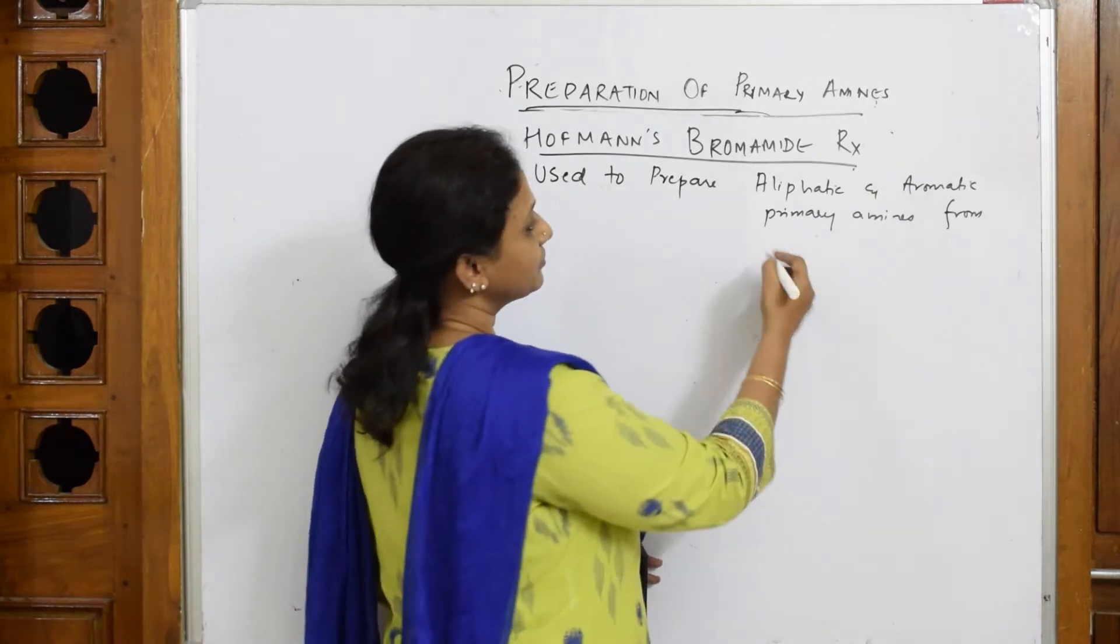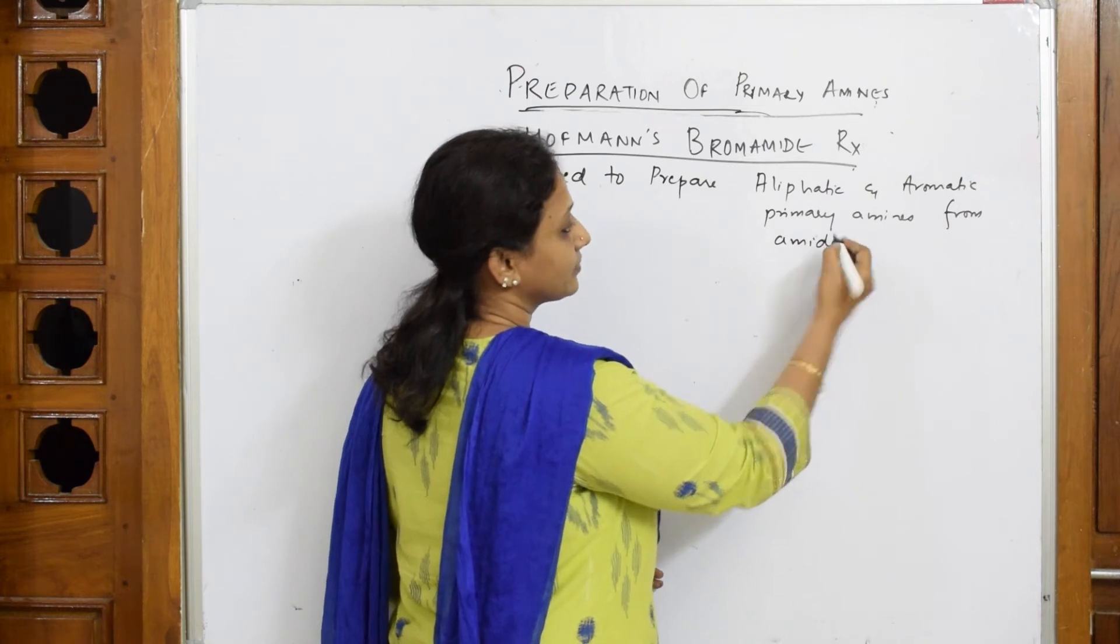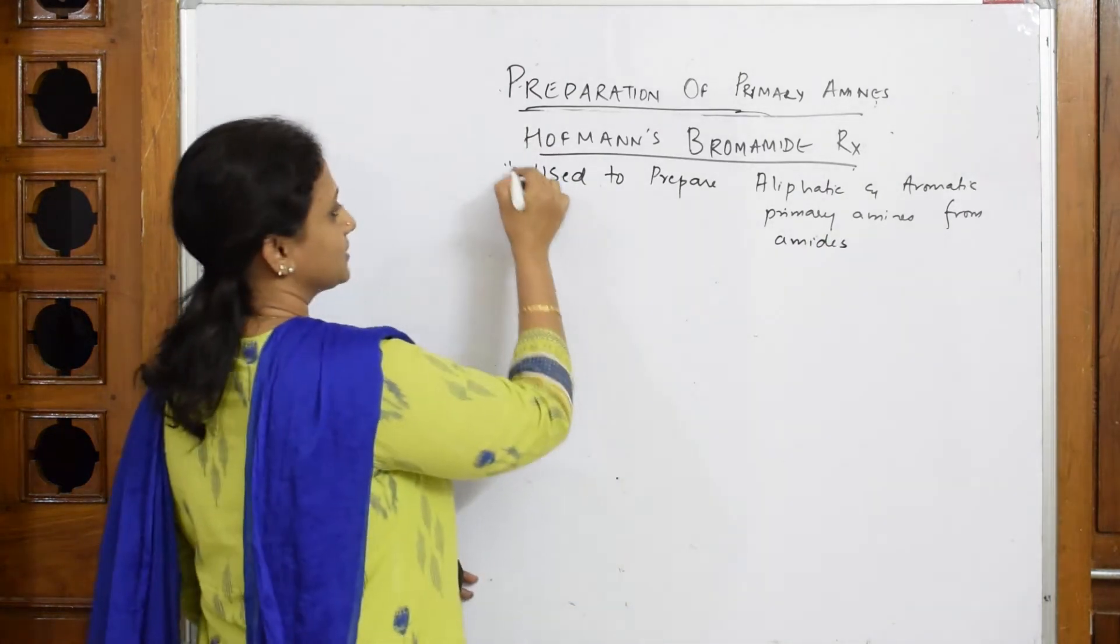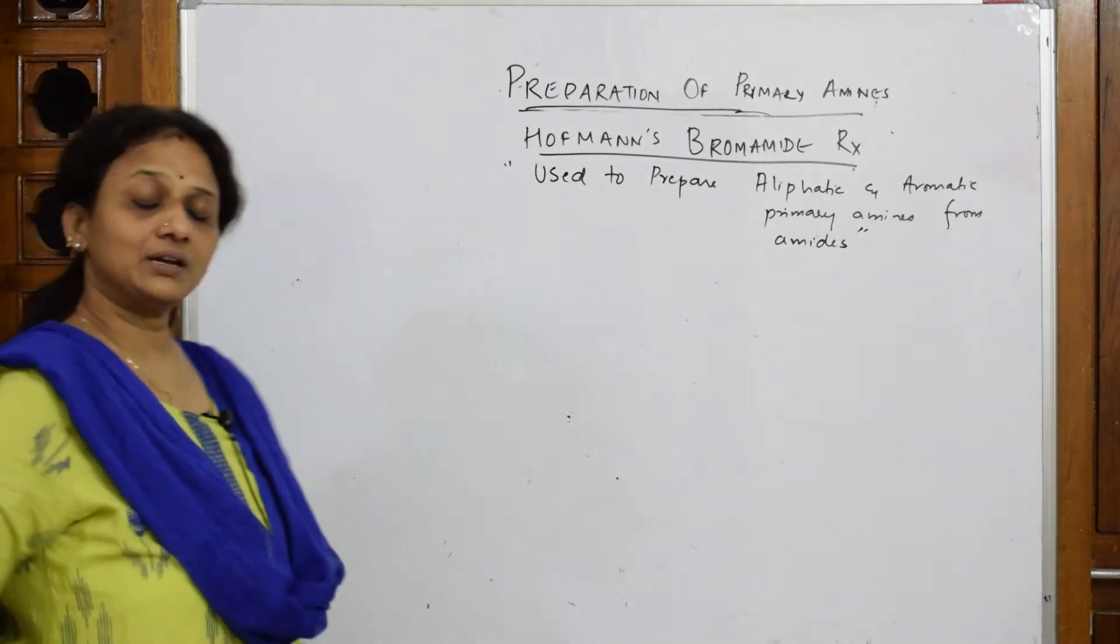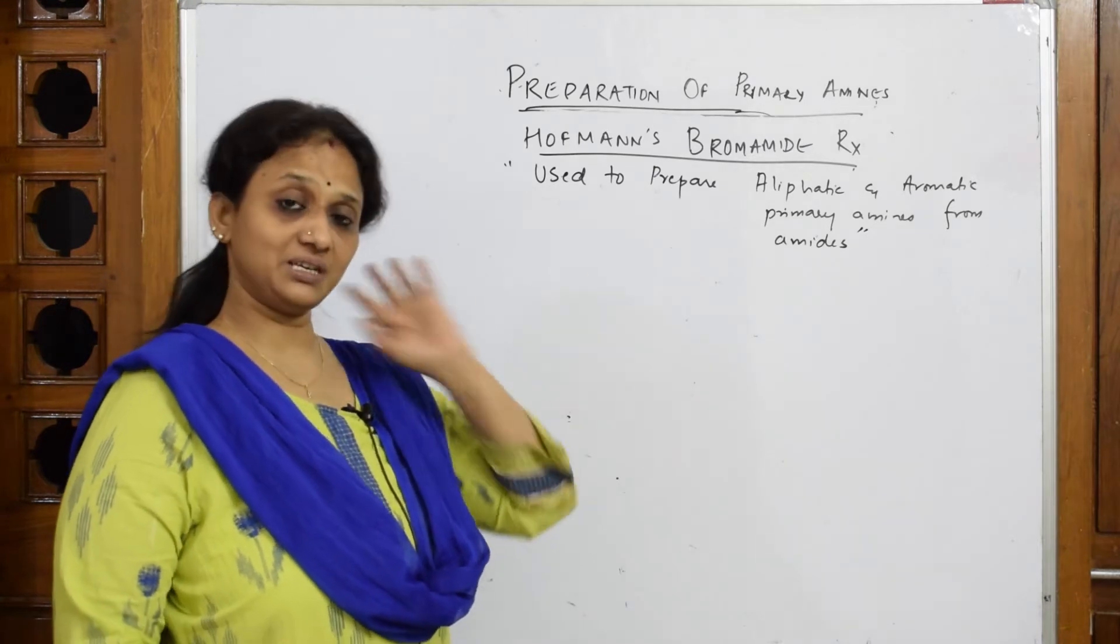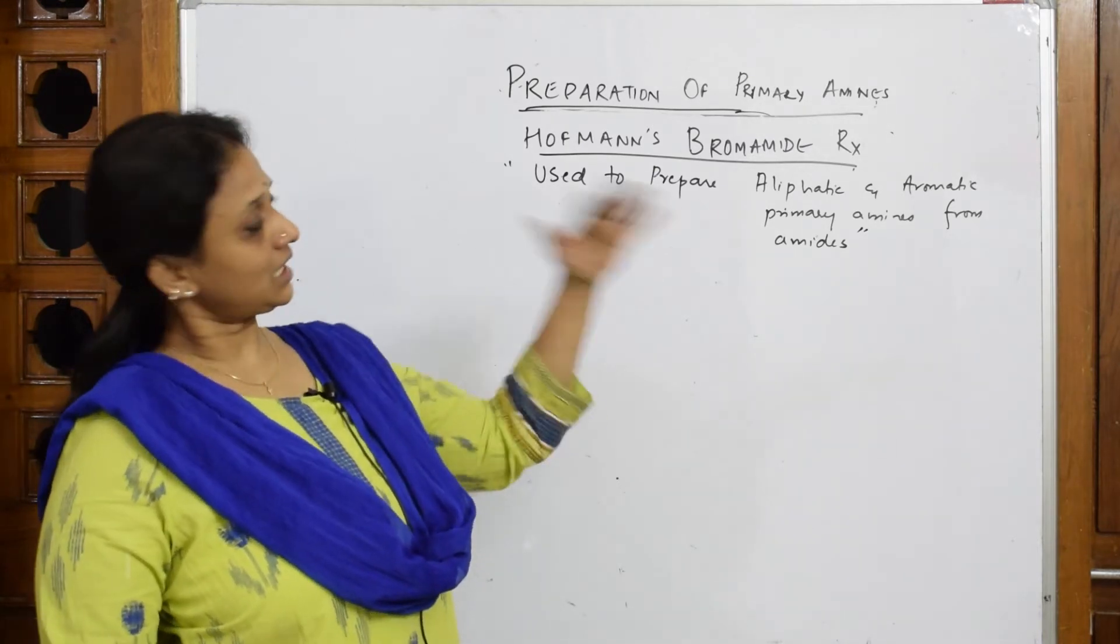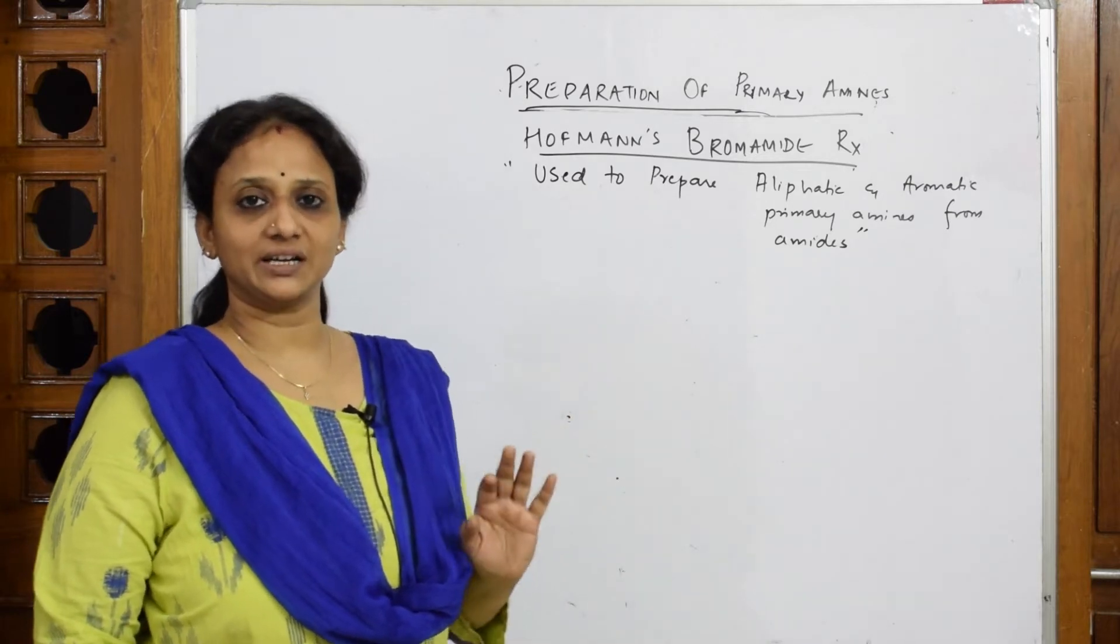At least this word please remember. Now let us go into the basic thing. Whenever you have to prepare any primary amines, aliphatic primary amine and aromatic primary amine, we use Hoffmann's Bromamide reaction.